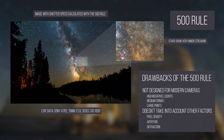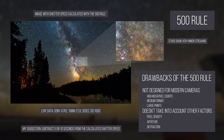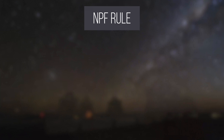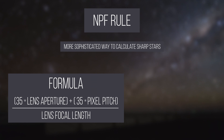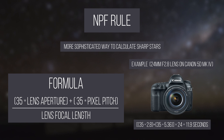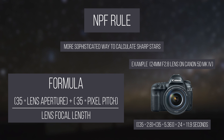If you're going to use this rule, I recommend subtracting 5 or 10 seconds from the result. The other method to calculate your shutter speed is using something called the NPF rule. The calculation is 35 times your lens aperture plus 30 times the pixel pitch of your camera, divided by the focal length of your lens.